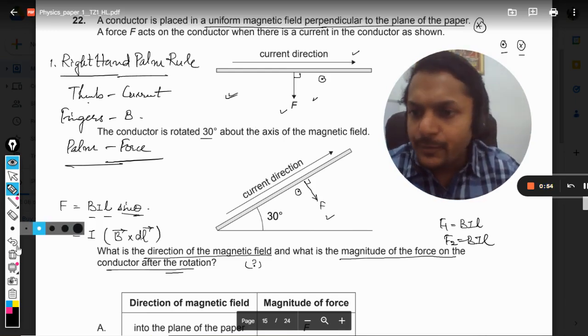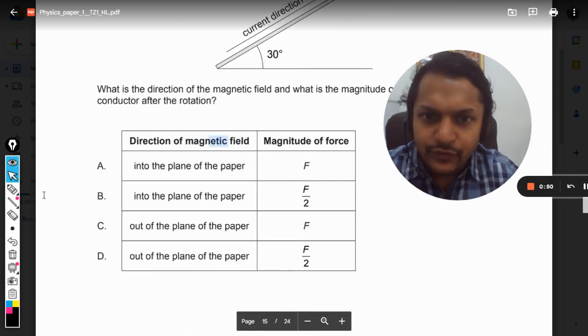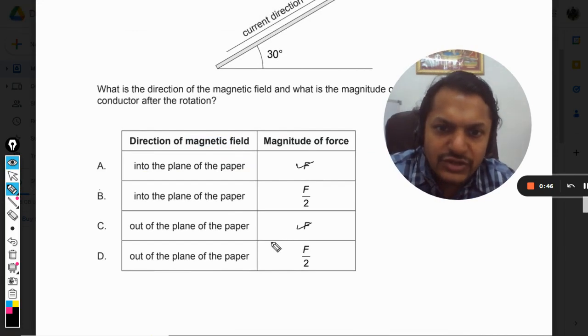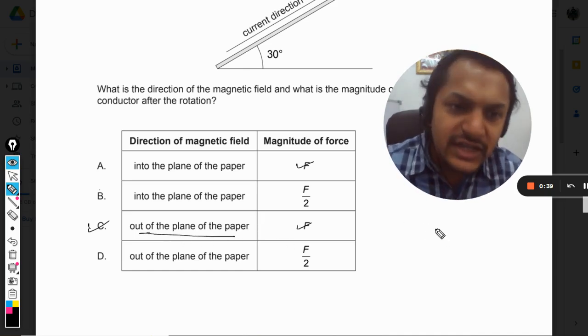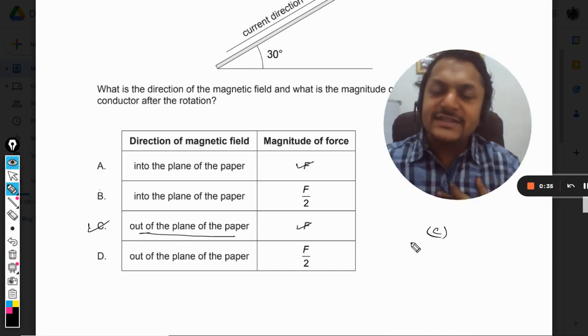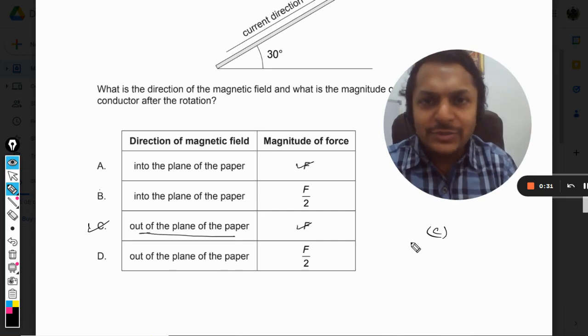So by having this much of the information with us, we can move downwards and we can see which will be the correct answer. First of all, the magnitude is not going to change and the direction of the magnetic field is out of the plane of paper. So C is our correct answer. This is Professor Varun. Please subscribe to the YouTube channel. All the best, bye.